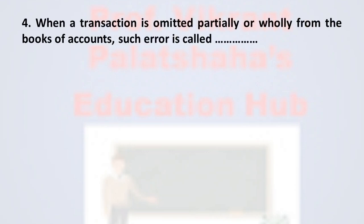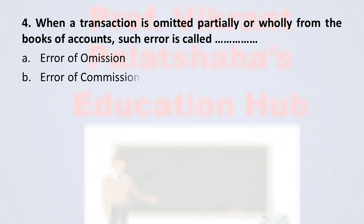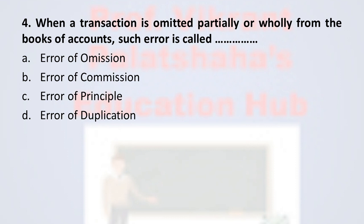Question number three: when a transaction is omitted partially or wholly from the books of accounts, such error is called — option A error of omission, option B error of commission, option C error of principle, and option D error of duplication. The correct option is option A, error of omission, when the transaction is partially or wholly omitted from the books of accounts.